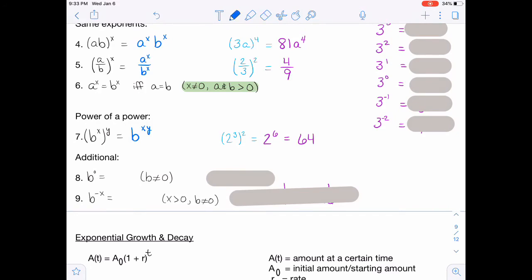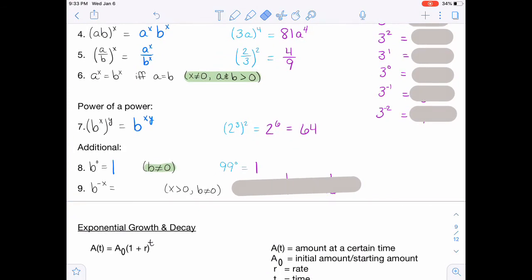Additional things here. Hopefully you remember that b to the 0, anything to the 0, assuming that item is not 0, ironically, anything to the 0 is 1. So I have a little numerical example there. 99 to the 0 is 1. And we're going to talk about that aside here in a minute that kind of shows you why that is true. Also, b to the negative x, so something to a negative power, you put in the denominator. So it becomes 1 over b to then a positive x. As long as x is greater than 0 and b does not equal 0. So we have those restrictions. And numerically, then, I have 4 to the negative 2. So that becomes 1 over 4 squared, which you could then write as 1 16th.